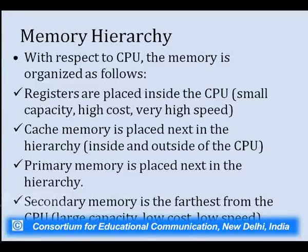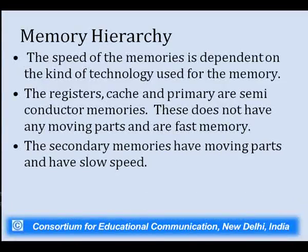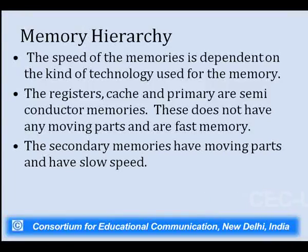With respect to the CPU, memory is organized as follows: registers are inside the CPU — small capacity, high cost, high speed. Cache is next, also within the CPU. Then primary memory, and secondary memory farthest from the CPU. The CPU cannot access data directly from secondary memory. Registers, cache, and primary memory are semiconductor-based with no moving parts, making them very fast. Secondary memories have moving parts — discs that rotate, tapes that move — so they are slower. Electronic memories like RAM, cache, and registers maintain data due to the presence of voltage or current.